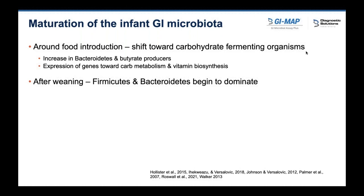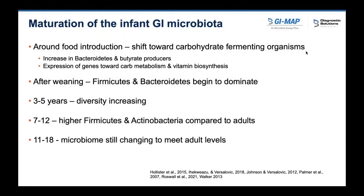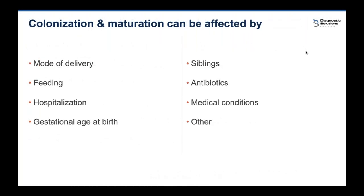After weaning, the Firmicutes and Bacteroidetes really start to dominate, while previously Actinobacteria, where Bifidobacterium falls, were prominent. It's been widely believed that around two and a half to three years the microbiome is fairly stable. However, we're really still increasing in diversity and richness up until age 18, through adolescence. So while you can interpret a GI map for a seven-year-old, just know the microbiome is not fully developed. Colonization and maturation can be affected by C-section versus vaginal delivery, feeding, hospitalization, and antibiotics.